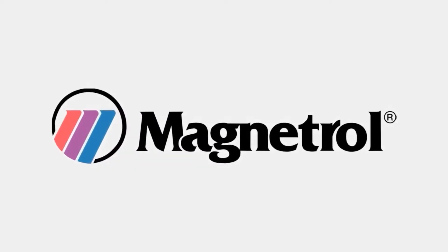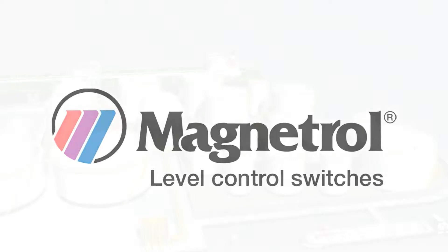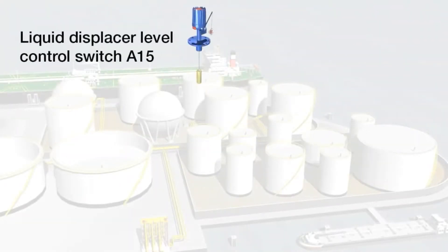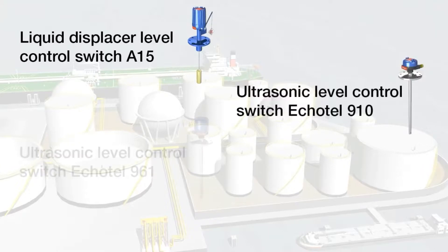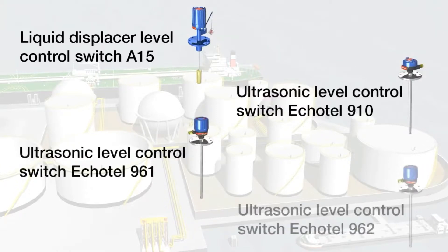Magnetrol level control switches. This video will briefly introduce the viewer to the Magnetrol liquid displacer level control switch model A15. The Magnetrol level control switch family includes the Echotel 910, the Echotel 961, and the Echotel 962.